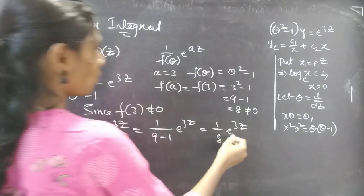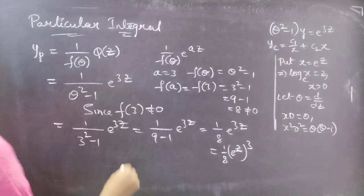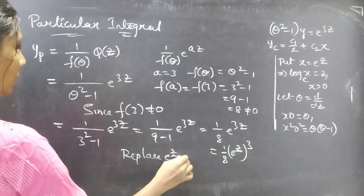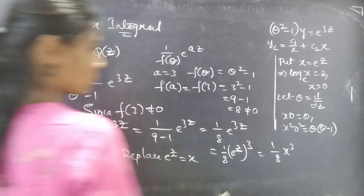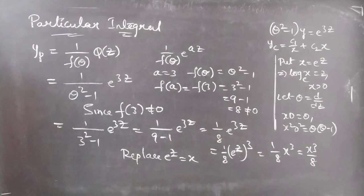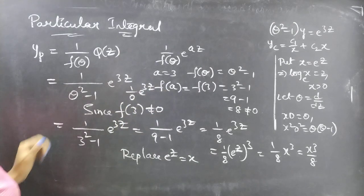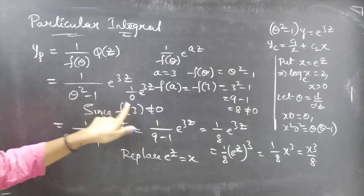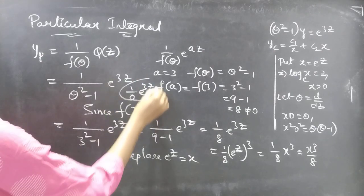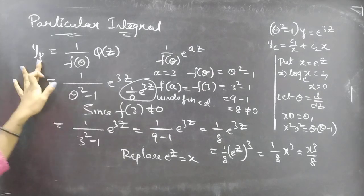Now we are having yp in terms of z; we need to write it in terms of x. We write e³ᶻ as (eᶻ)³, so we can replace eᶻ by x, giving yp = (1/8)x³ = x³/8. Always remember the denominator must be non-zero. If after replacing θ by a the denominator were 0, we would get 1/0 · e^(az), which is undefined. But in our case the denominator is non-zero, so we can follow this process.